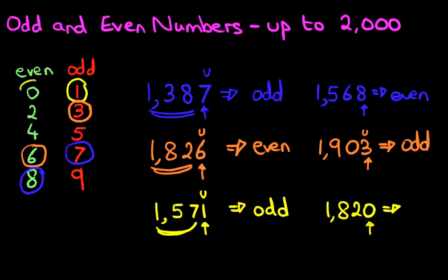The last digit is 0. Let's have a look at our chart. 0 is over here. Therefore, because 0 is even, the whole number 1,820 is an even number.